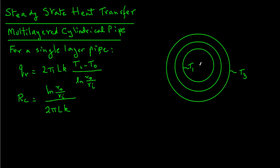So the outside surface temperature T3, inside surface temperature T1. And we will also show the radius. So the inside radius for the inner pipe is R1.